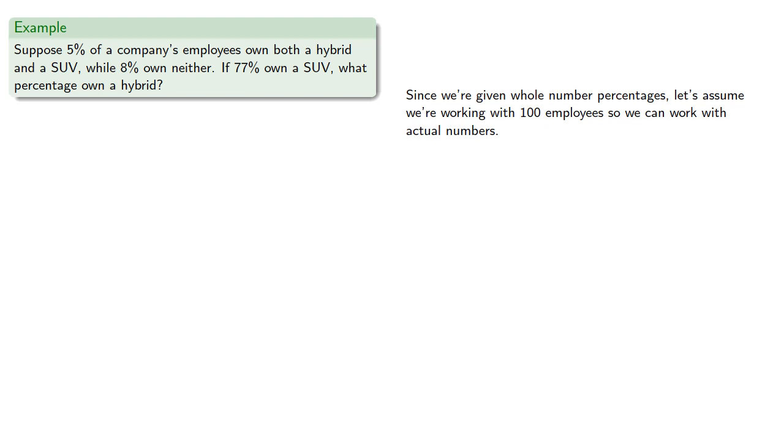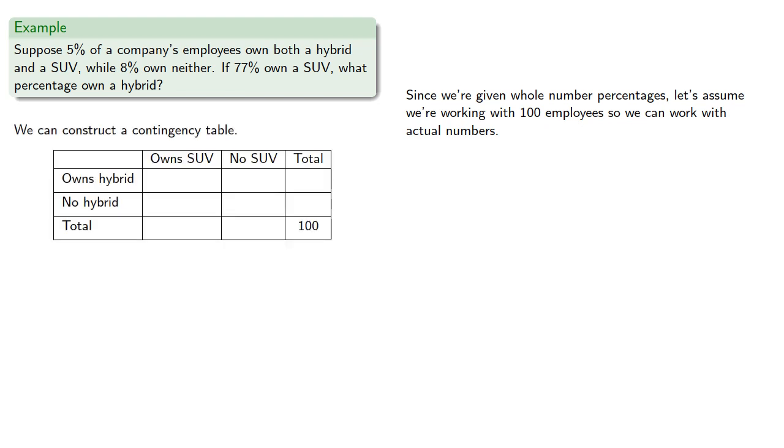So again, we'll set up a contingency table. Now we're told that 5% of 100, or 5, own a SUV and a hybrid, so they go in this column. And 77% of 100, or 77, own a SUV, so they go in this column in the totals row.